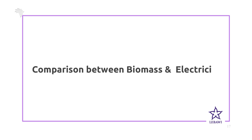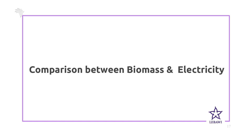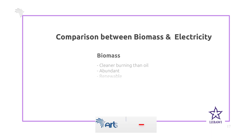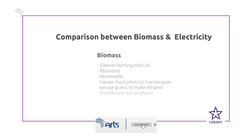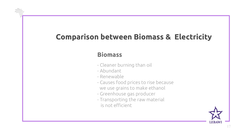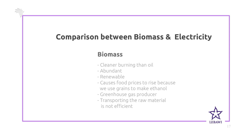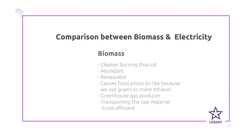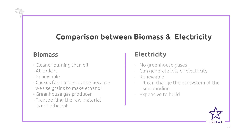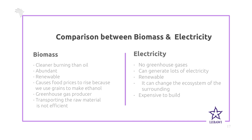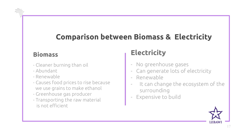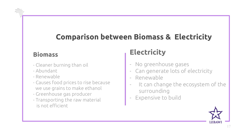Let's compare biomass and electricity. Biomass is abundant and renewable, but it causes food prices to rise because grains are used to make ethanol, it has a greenhouse effect, and transporting raw materials is not efficient. Electricity produces no greenhouse gases, can generate lots of energy, and is renewable, but it changes the ecosystem of the surrounding area and is very expensive to build.